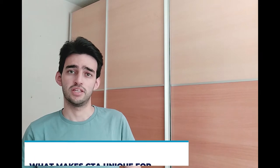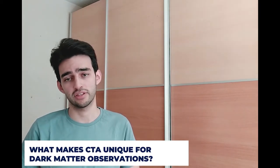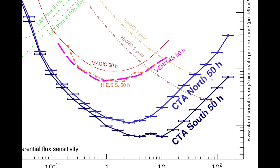Many dark matter models have been constrained over the years with different gamma ray experiments, such as the Fermi-LAT Space Telescope, MAGIC, HESS, or VERITAS.